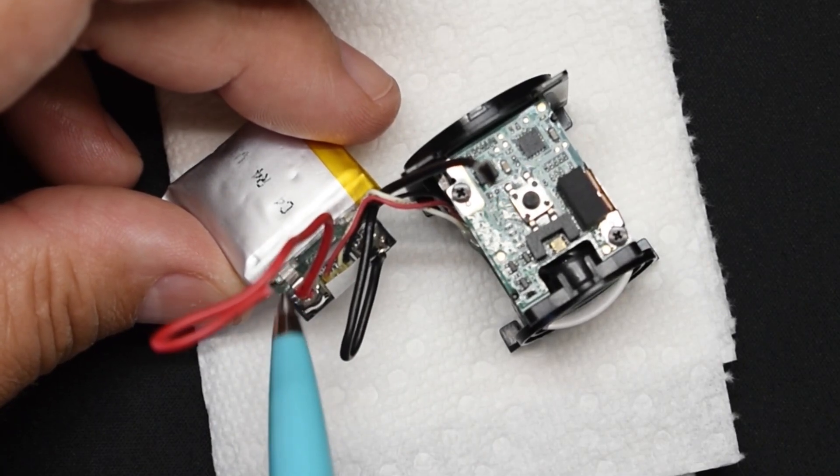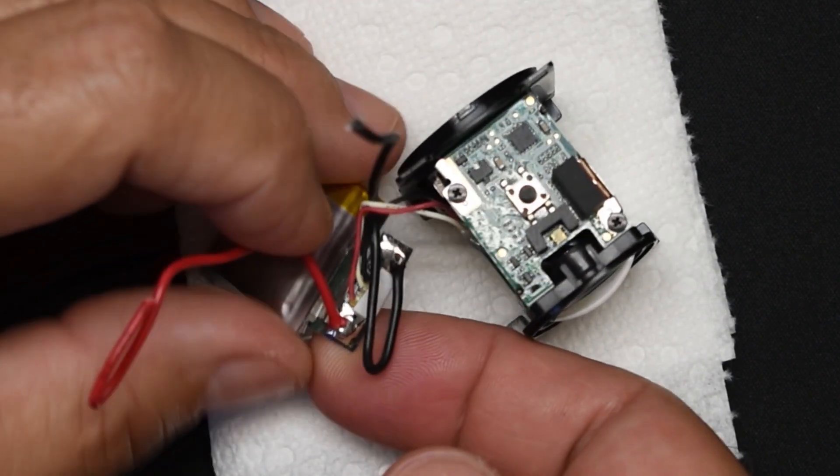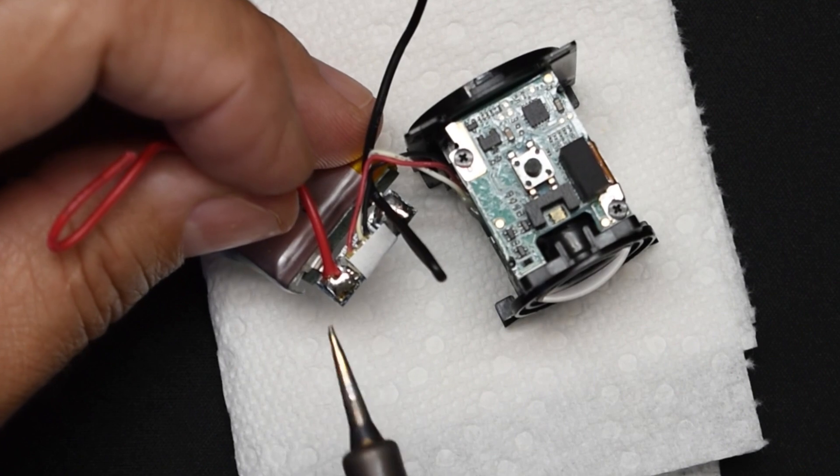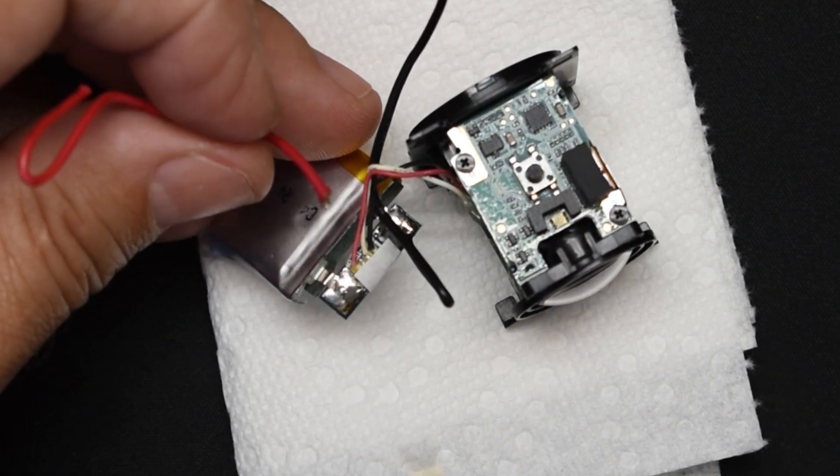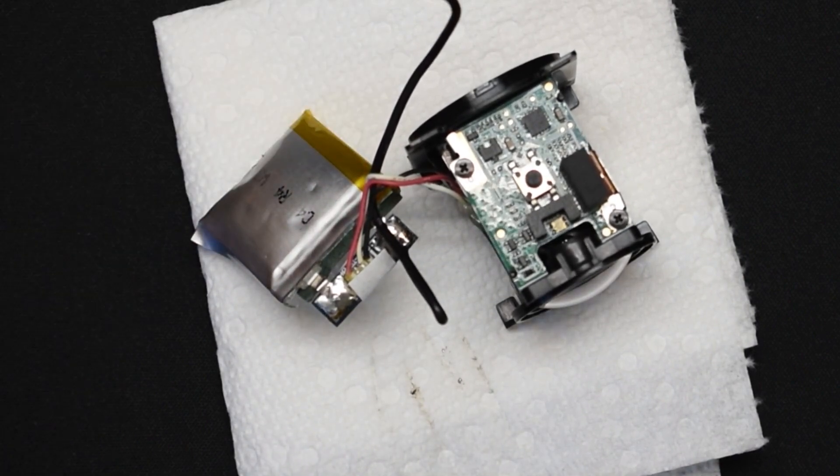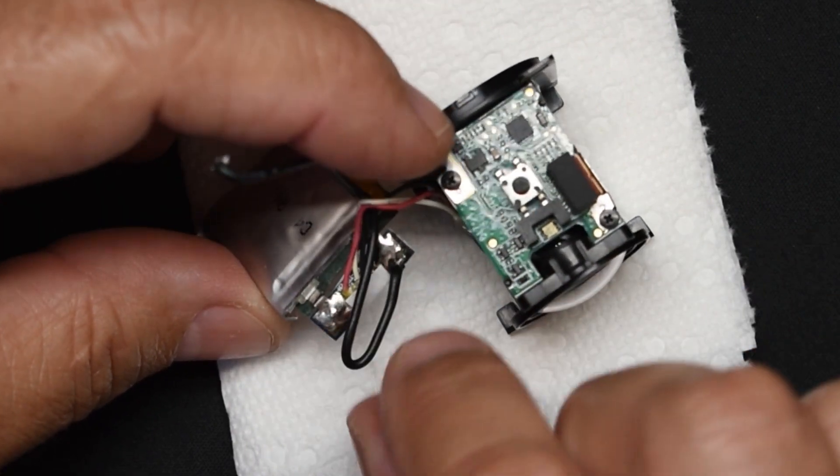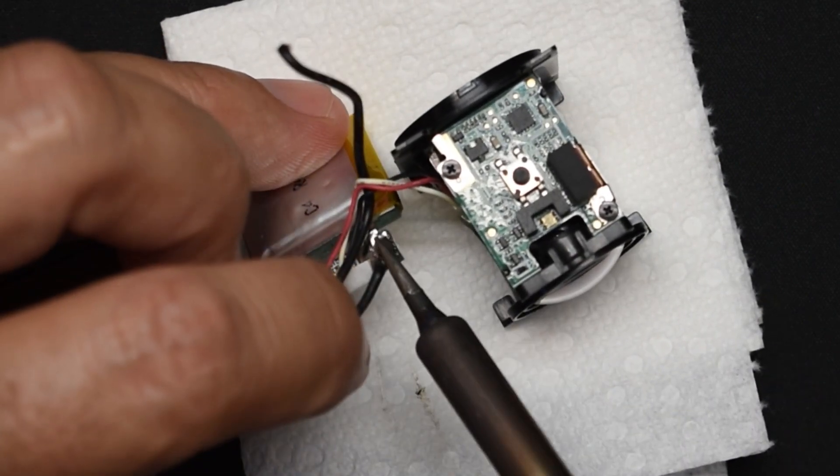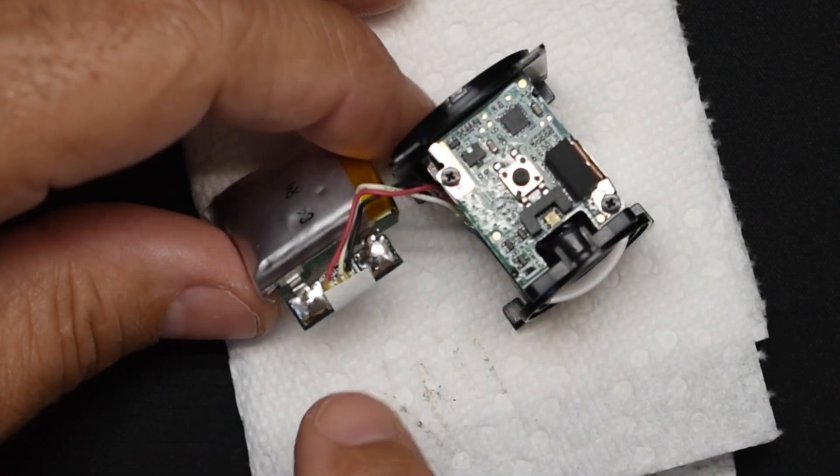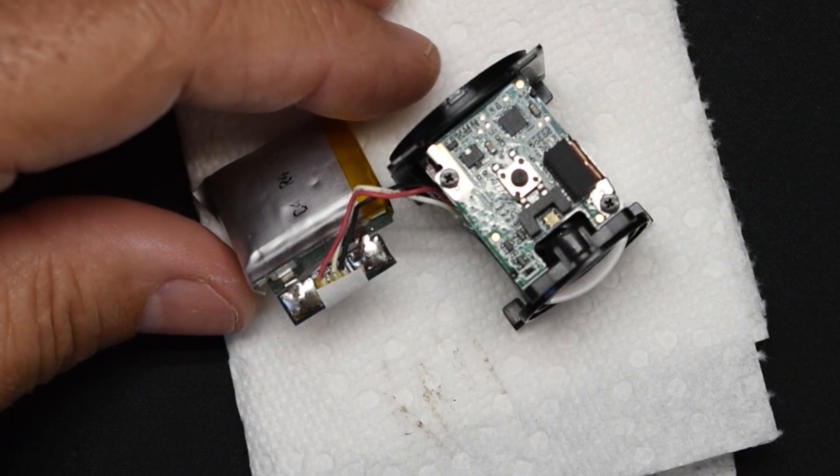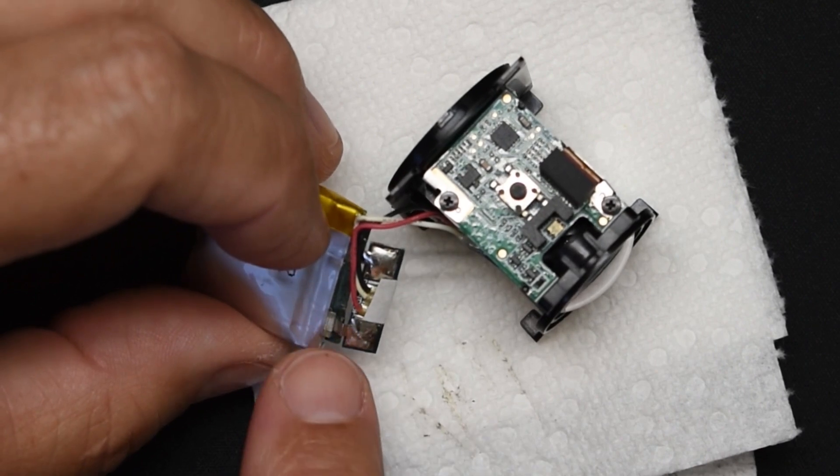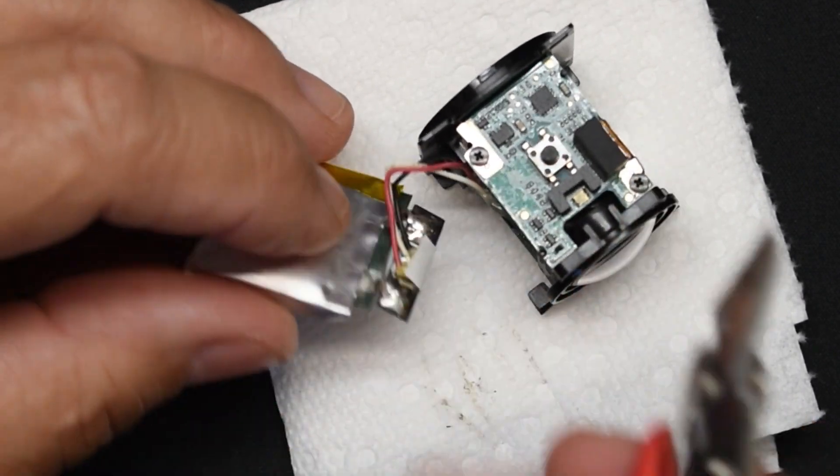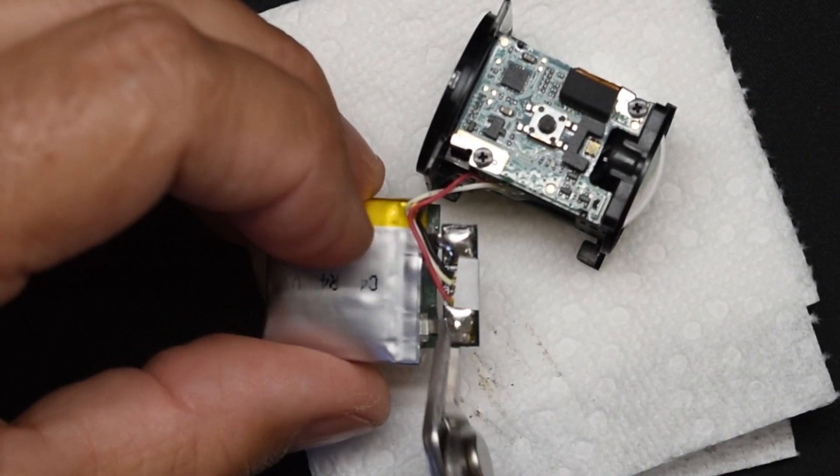Let me pull this apart a little bit more so we can get in here. I need to separate this from the positive on the cell. Let me take the red wire off. Now I need to take this off of the lipo cell. The easiest way to do this is to trim it right here and just wipe off the end.